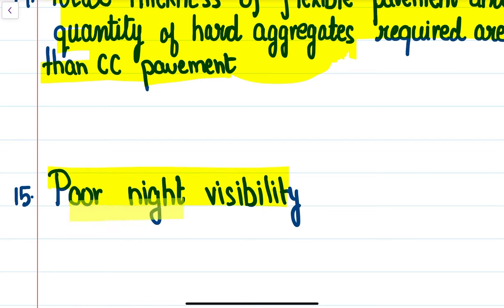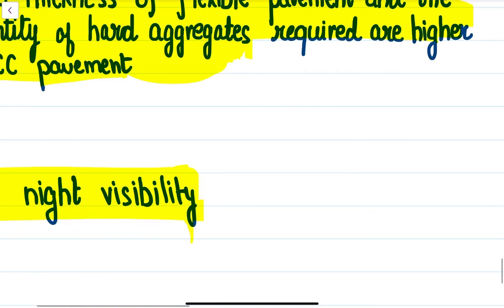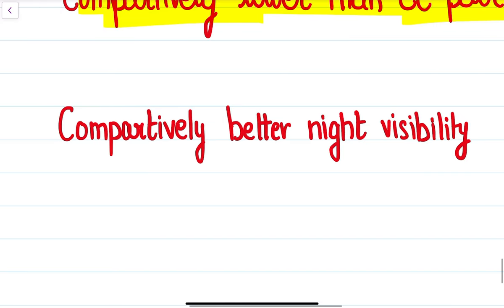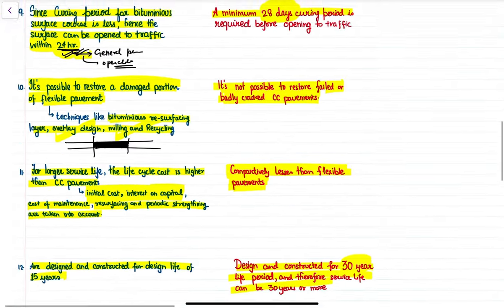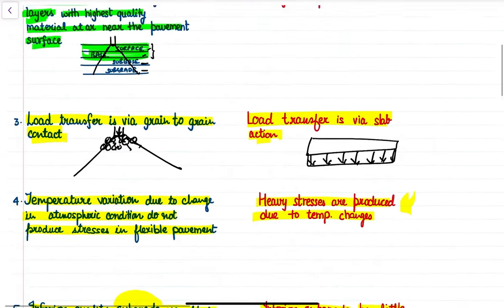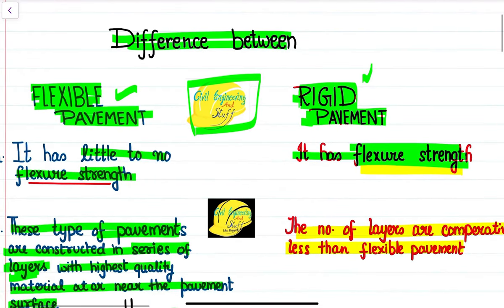The last difference is visibility: flexible pavements are dark-colored blacktop roads, so night visibility is poorer. Rigid pavements are whitish or grayish in color, providing better visibility compared to flexible pavements. These are the 15 differences between flexible and rigid pavements. I hope the lecture was clear and useful — please like the video, comment your views, and subscribe to the channel for more videos.